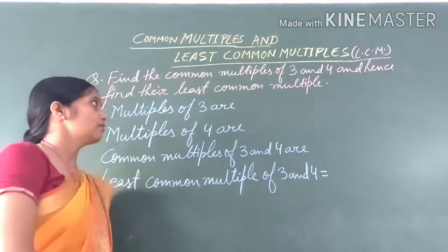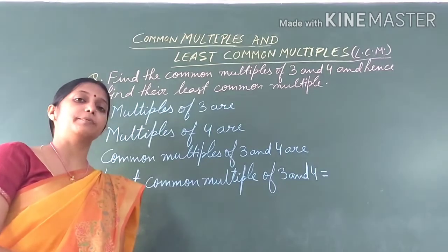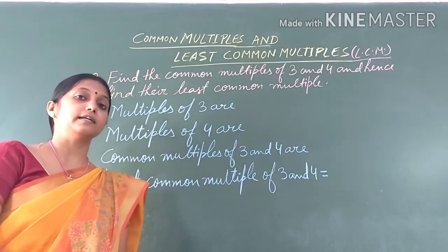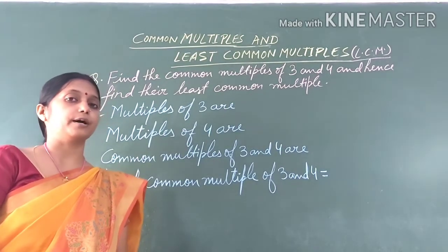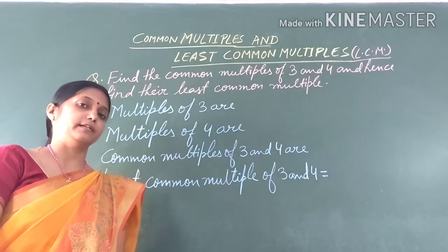The question is on the other board. We will find common multiples of 3 and 4, and then we will find the least common multiple.